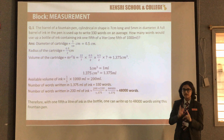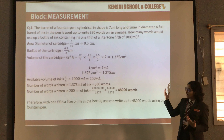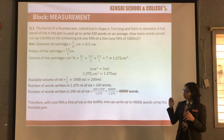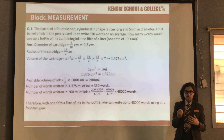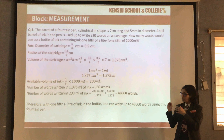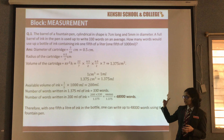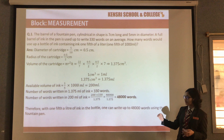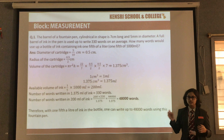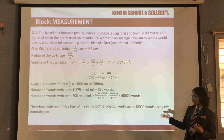So in 1 ml of ink, a person can write 330 ÷ 1.375 words. The available amount of ink is 200 ml, so to find the number of words writable with 200 ml, we multiply 200 by (330 ÷ 1.375). That gives us 200 × 330 ÷ 1.375, and when we simplify, we get 48,000 words. So with 200 ml of ink, we can write 48,000 words.